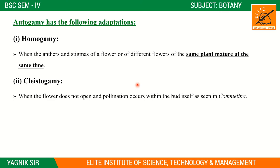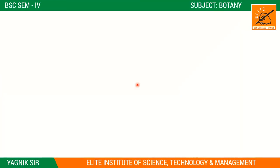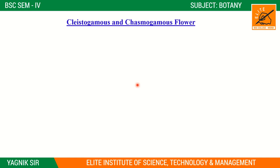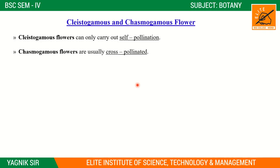Autogamy has two types: homogamy and cleistogamy. Cleistogamy is when the flower is closed — the flower does not open and pollination occurs within the bud itself. Cleistogamy flowers can only carry out self pollination, while chasmogamy flowers are usually cross pollinated.